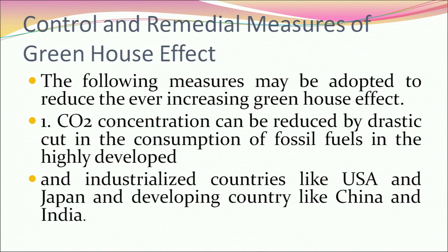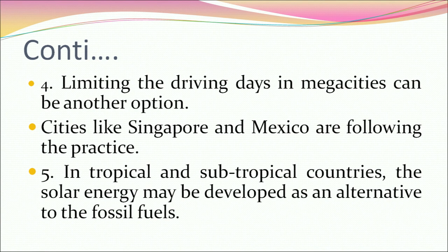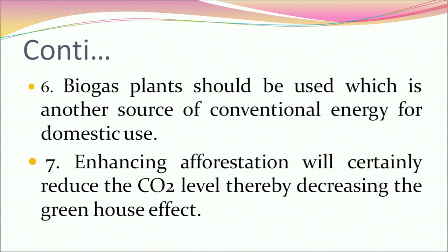Measures to reduce the greenhouse effect include: first, reducing CO2 concentration by drastic cuts in fossil fuel consumption in highly developed countries like the USA and Japan, and developing countries like China and India. Second, developing alternative efficient fuels — methane may substitute petroleum, and hydroelectric and thermal power are better alternatives. Restrictions on emissions of CO2, CFCs, and NO2 from factories and automobiles are needed. Solar energy and biogas plants are other alternatives. Enhancing afforestation will reduce CO2 levels, thereby decreasing the greenhouse effect.